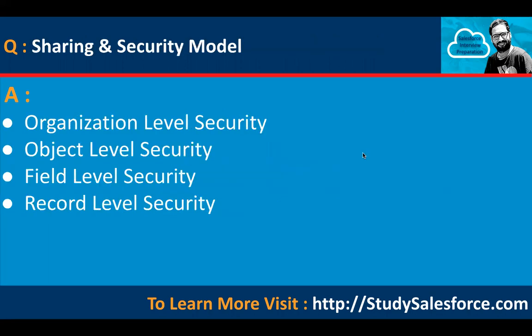The next question can be: what is the sharing and security model? There are four basic pillars: organization-level security, object-level security, field-level security, and record-level security.